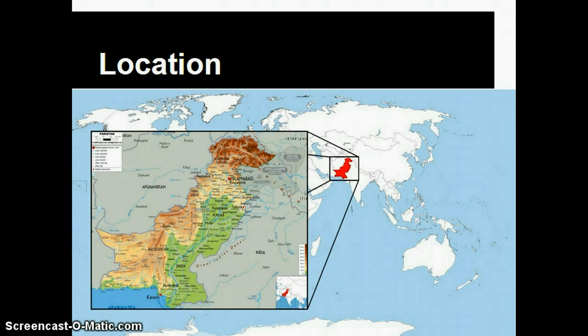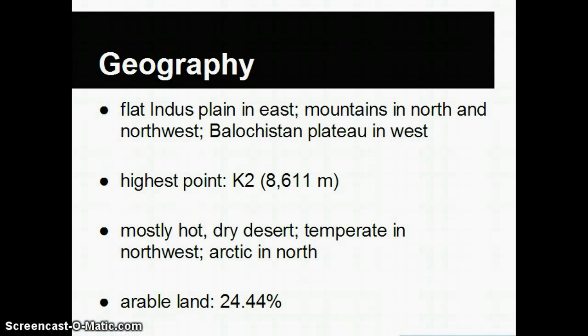Here's a closer look. You can see from the green and the brown some of the different climates, which we'll talk about in a moment. In the eastern part of the country, the Indus Plain is flat — that's the fertile green area that you saw on the map. In the north and northwest there are mountains, and on the west there's the plateau. The mountains and the plateau are the drier, more arid areas of Pakistan. Those were brown on the previous map.